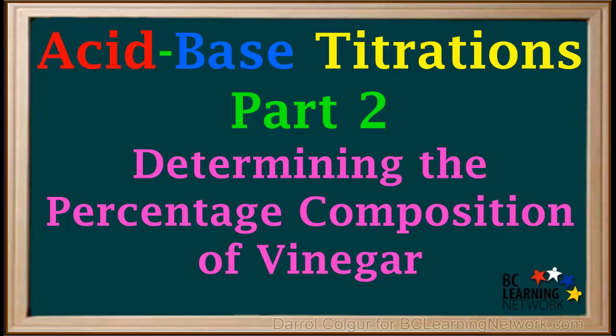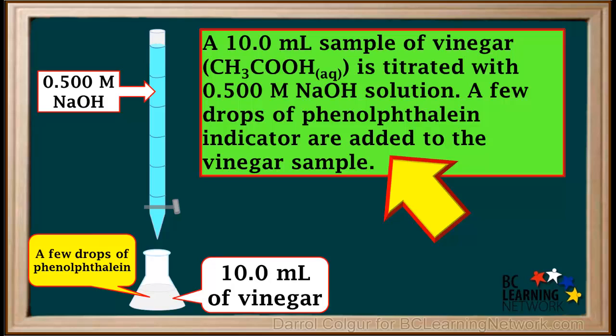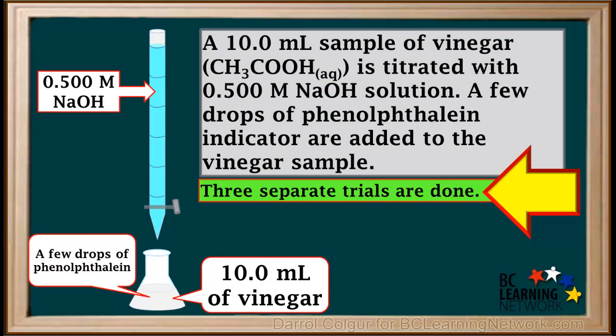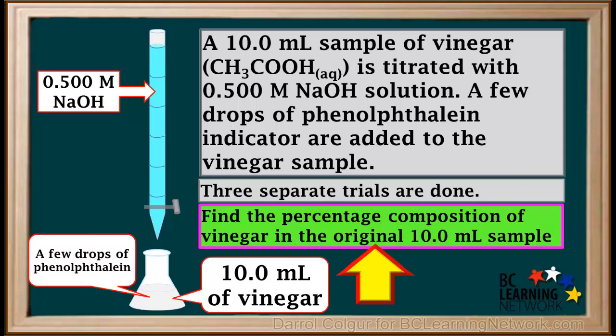A titration procedure can be used to find the percent composition by mass of a given solution. We'll give you an example and work through the steps in the calculations. A 10 milliliter sample of vinegar, or aqueous acetic acid, CH3COOH, is titrated with 0.5 molar NaOH solution. A few drops of phenolphthalein indicator are added to the vinegar sample, and three separate trials are done. We are asked to find the percentage composition of vinegar in the original 10 milliliter sample.